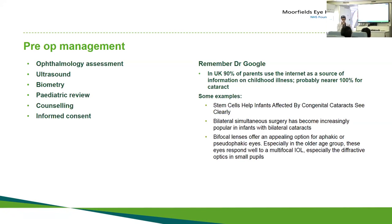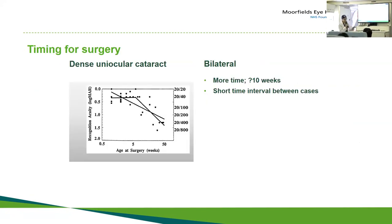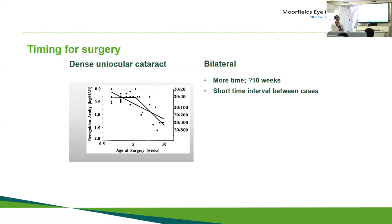For uniocular cataracts, a graph shows that if you wait too long your chances of good vision go down. You have approximately six to ten weeks after birth to operate. For bilateral cataracts you have a little longer, but for dense bilateral cases you must leave a short interval between eyes — preferably about a week — because of the risk of infection with simultaneous bilateral surgery.